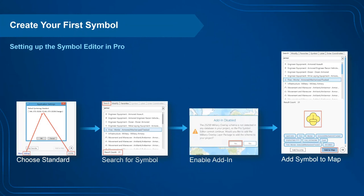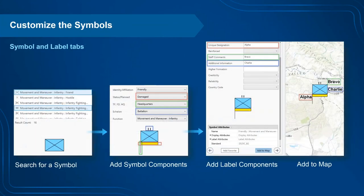When you click Yes, you can add either the 2525B or 2525D military overlay schema to your project, enabling the add-in so you can begin adding and customizing symbols. Customizing means specifying a variety of symbol and label components — adding them to the map to convey exactly what you want within your overlay.